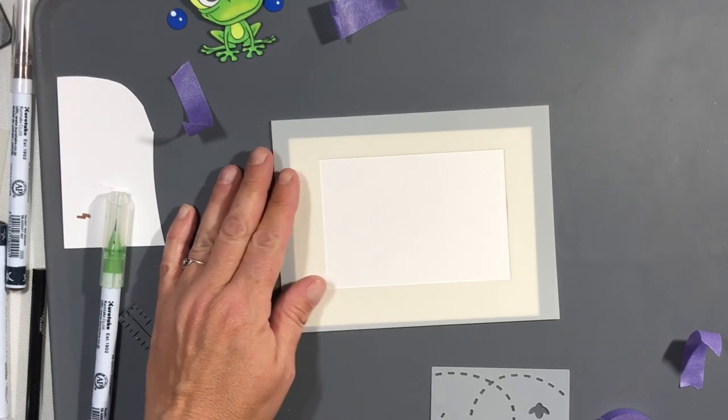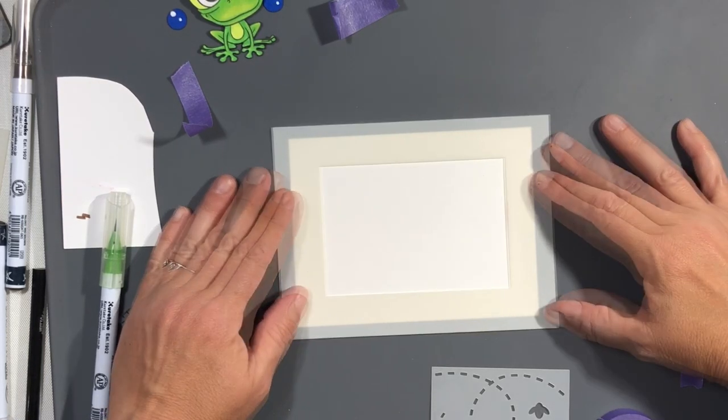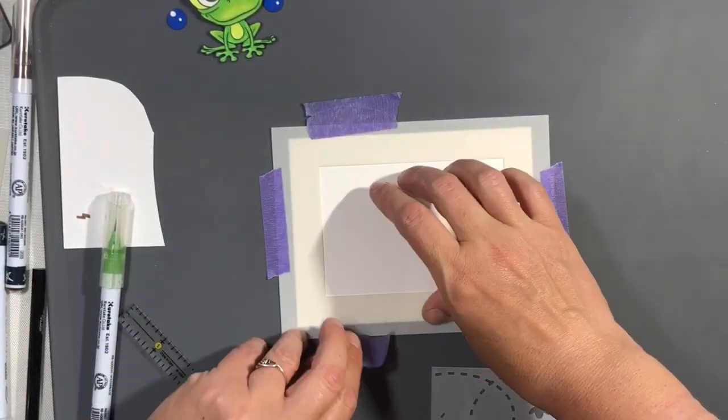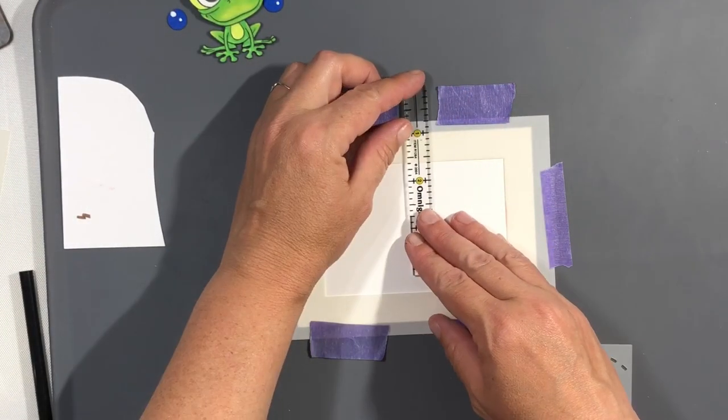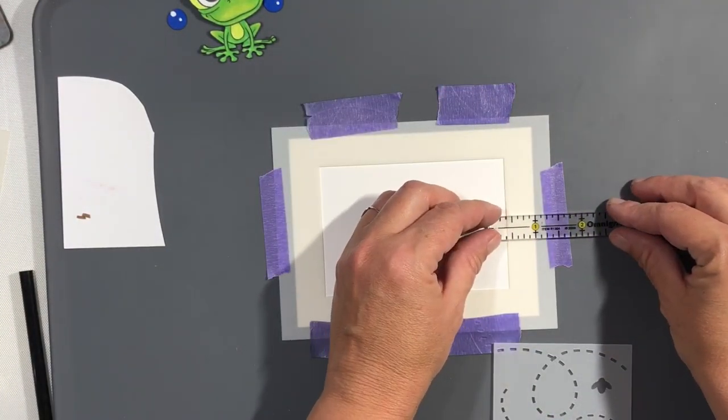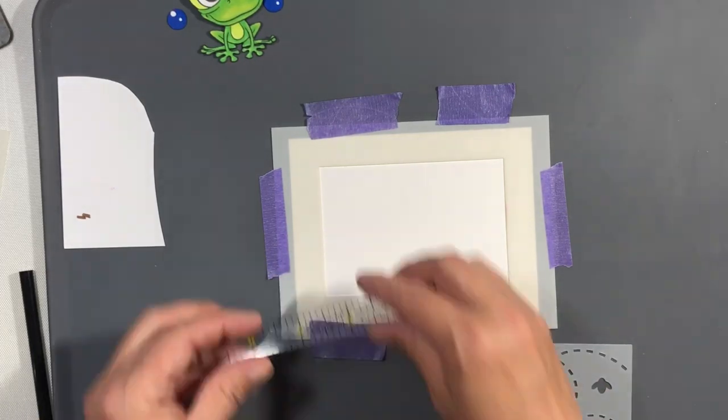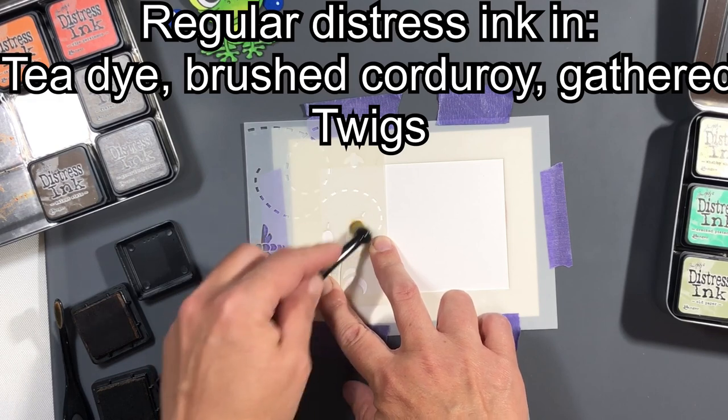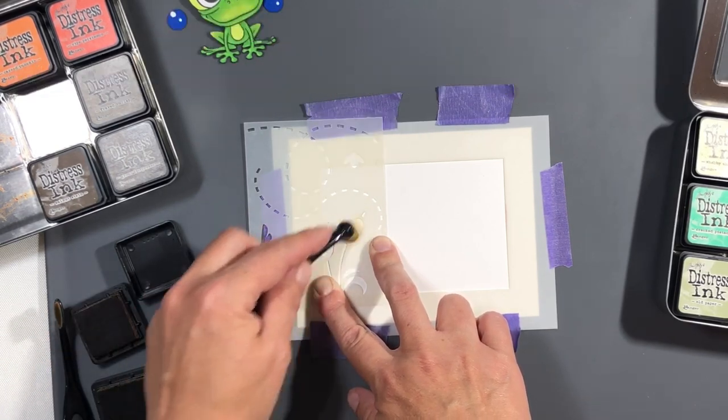Okay, on to the next part of the card. I'm using this rectangle extraordinaire stencil from MFT and I'm using it so that I can center my background. I'm just making sure it's roughly the same around all four sides there with my little ruler.